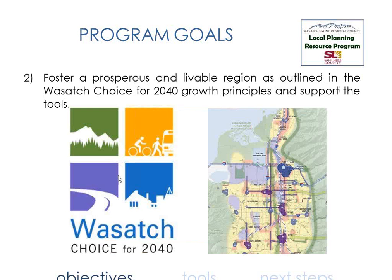The second goal gives you an opportunity to think about the region — how is what you're doing affecting the metropolitan area as a whole? You can go to the Wasatch Choice for 2040 and look at the growth principles. A lot of these are related to the next two goals, which I'll talk about in a bit more detail.